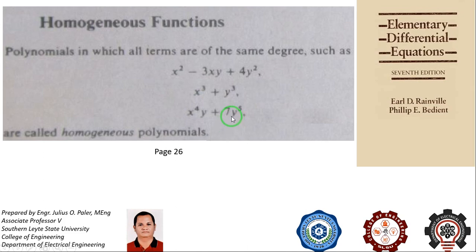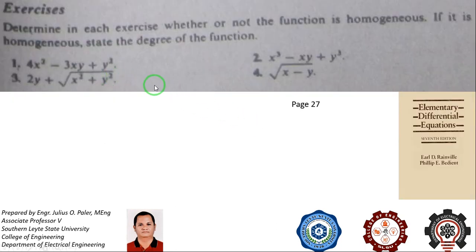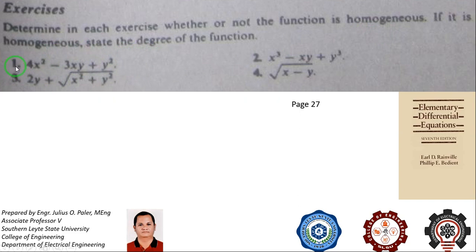Now that we know how to determine homogeneity of a particular function, let's go to the exercise on page 27 of our textbook. You are to determine whether or not the function is homogeneous, and if it is, state its degree. For number one, you have 4x squared minus 3xy plus y squared. All terms are second degree. Therefore, this is homogeneous to the second degree.